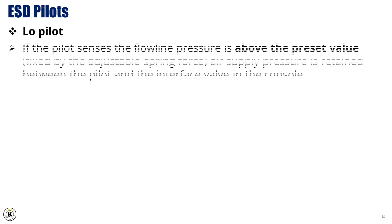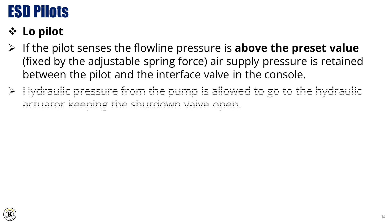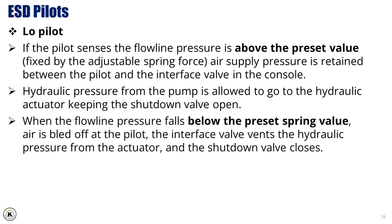Low pilot: If the pilot senses the flowline pressure is above the preset value, fixed by the adjustable spring force, air supply pressure is retained between the pilot and the interface valve in the console. Hydraulic pressure from the pump is allowed to go to the hydraulic actuator, keeping the shutdown valve open. When the flowline pressure falls below the preset spring value, air is bled off at the pilot. The interface valve vents the hydraulic pressure from the actuator, and the shutdown valve closes.